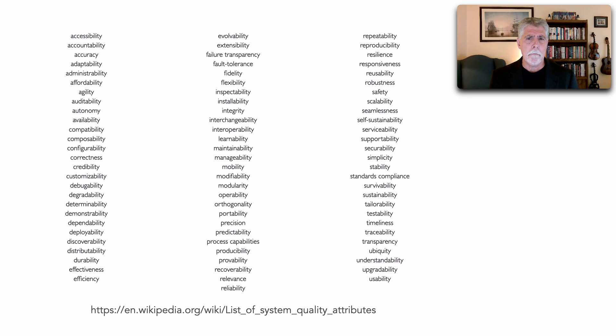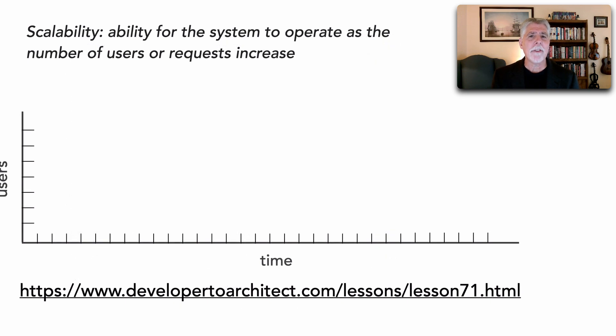There's a problem with these however. They're really hard to define. There's no place you can go to get a true solid definition of any of these architecture characteristics. Now in lesson 71 I talked about scalability and elasticity and I defined scalability as the ability for the system to operate as the number of users or requests continue to increase. That's a good definition of scalability. But probably not good enough because of this word here, operate. What does that even mean?